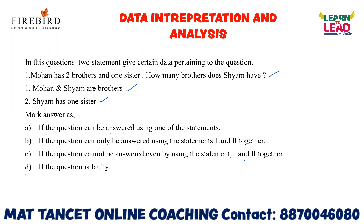If the question can be answered using only one statement, choose option A. Mohan and Shyam are brothers, and from the main question, Mohan has two brothers — let's call them brother 1 and brother 2 — and one sister. If Shyam is brother 1, then Shyam will have two brothers. However, only if I combine both statements can I arrive at the conclusion that Shyam has two brothers. So the correct answer for this question is option B.